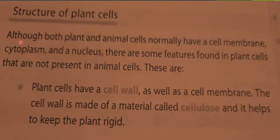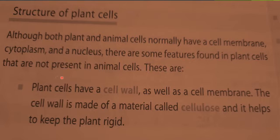Listen carefully to the reading. Although both plant and animal cells normally have a cell membrane, cytoplasm, and a nucleus, there are some features found in plant cells that are not present in animal cells. Plant cells have a cell wall as well as a cell membrane. The cell wall is made of a material called cellulose, and it helps to keep the plant rigid — rigid means firm.